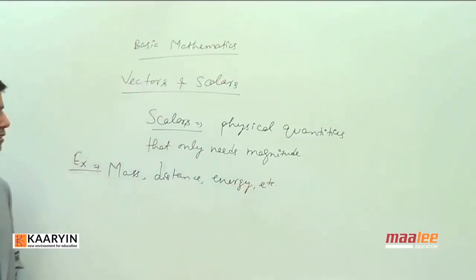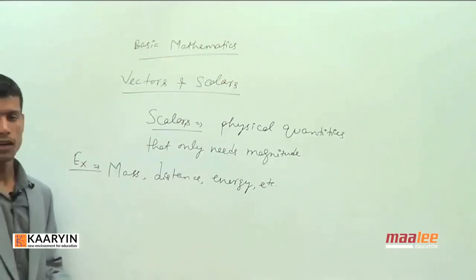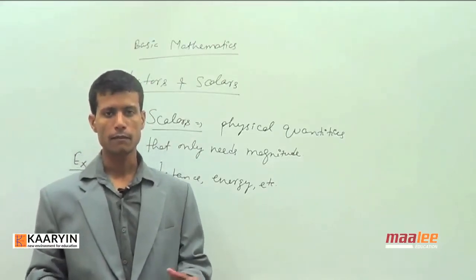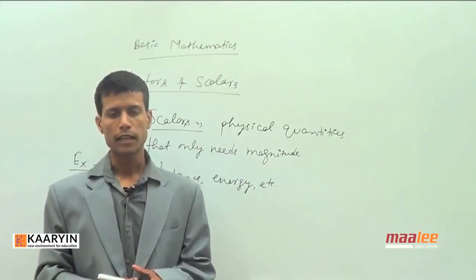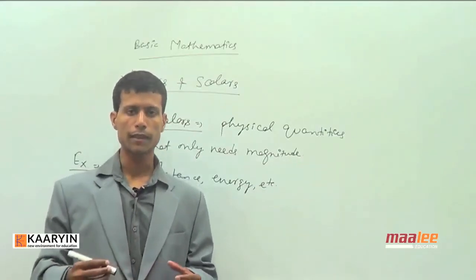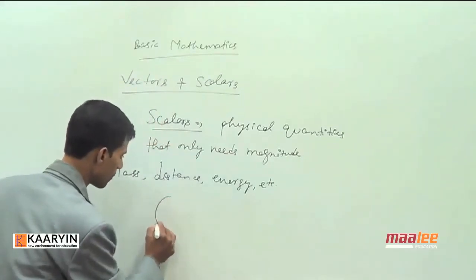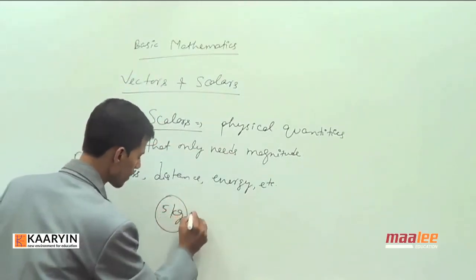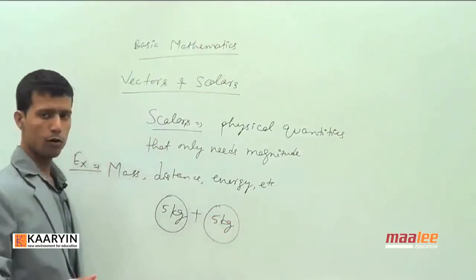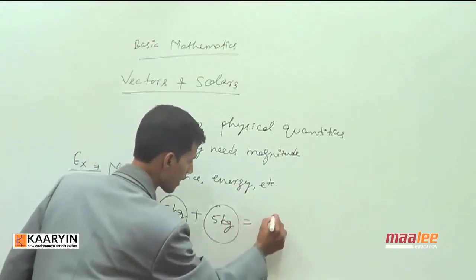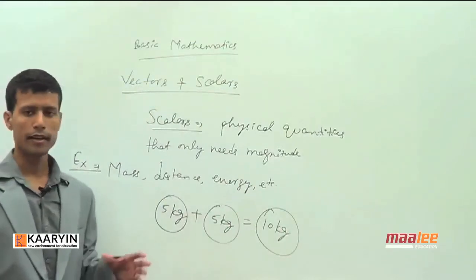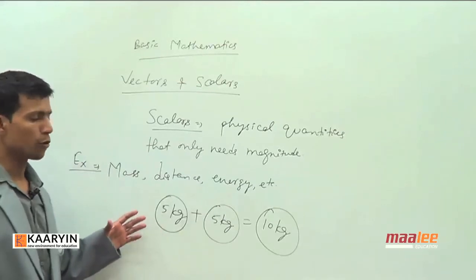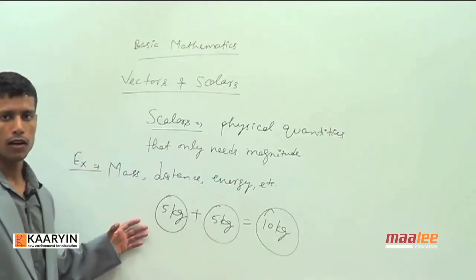What does this mean? When we say the mass of one apple is 5 kg and the mass of another apple is also 5 kg, if we combine the two apples the total mass becomes 10 kg. It does not matter in which direction one apple meets the other — no matter how they come together, the net mass will be 10 kg.